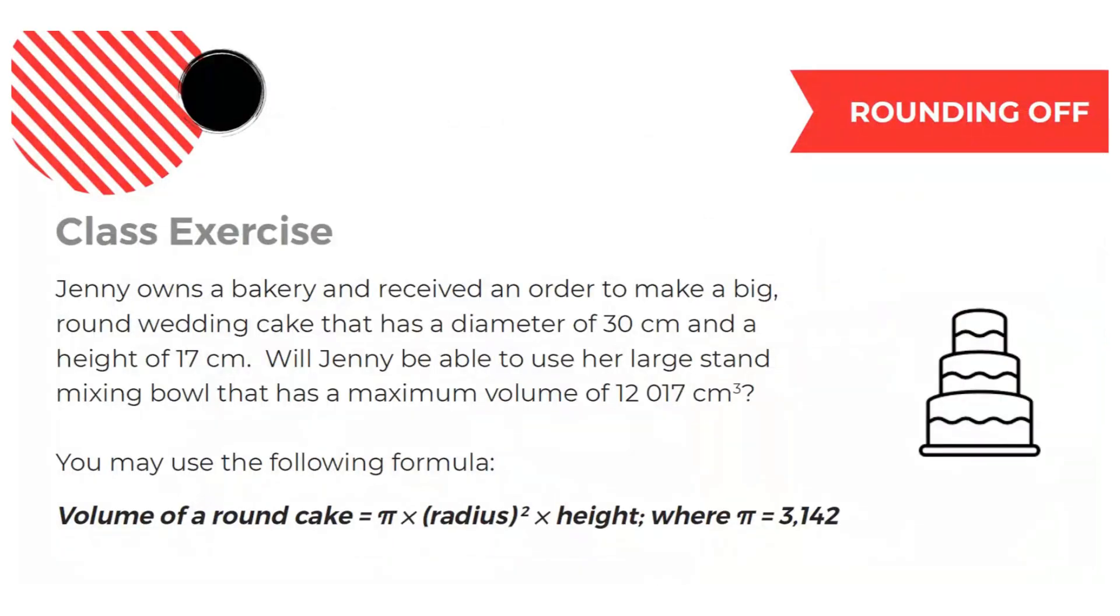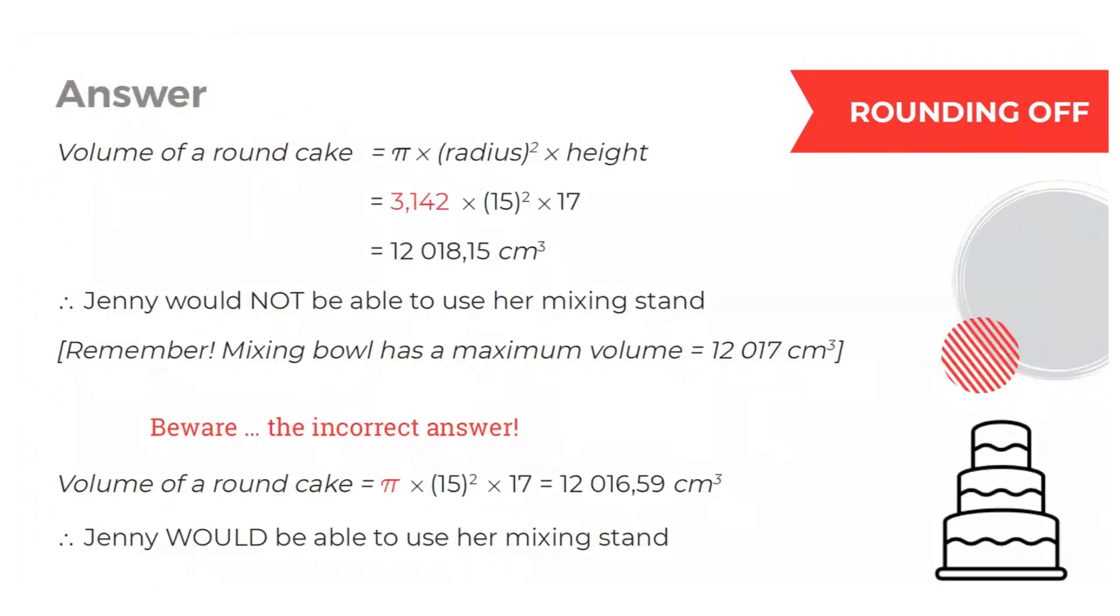Then this exercise is great because you can see in your class who uses 3.142 and who uses pi on their calculator. So the quick exercise is Jenny's got certain restrictions for her cake, and she wants to know whether her large mixing bowl will accommodate the volume of the batter. So in the answers, those that use 3.142, they would come to a volume that exceeds the mixing bowl. So their answer would be Jenny would not be able to use her mixing stand.